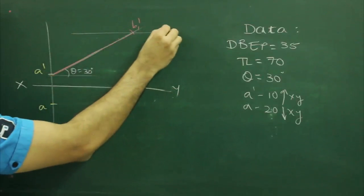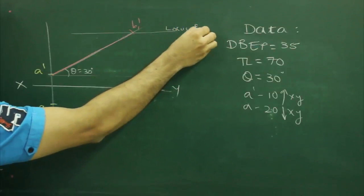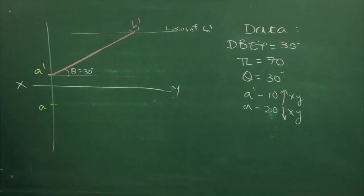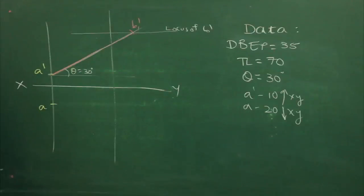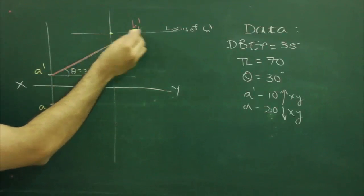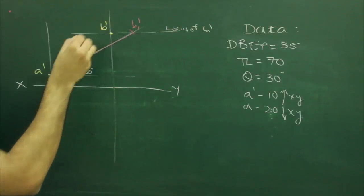We can mark locus of B dash. After that, we are given DDP, so I can mark DDP from here. So wherever it will intersect with the locus of B dash, that point would be B dash.